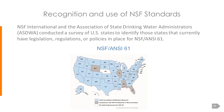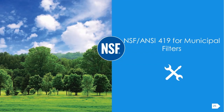NSF ANSI 61 is widely recognized in the United States. NSF International worked with the Association of State Drinking Water Administrators (ASDWA) to conduct a survey of U.S. states to identify those that have legislation, regulations, or policies in place for NSF ANSI 61. Currently, 48 out of 50 states require NSF 61, making it a widely required standard — and many of these municipal filtration products must have 61 certification to be used in most states. Now I'm going to hand the conversation over to my colleague, Mike Blumenstein, to talk about 419.